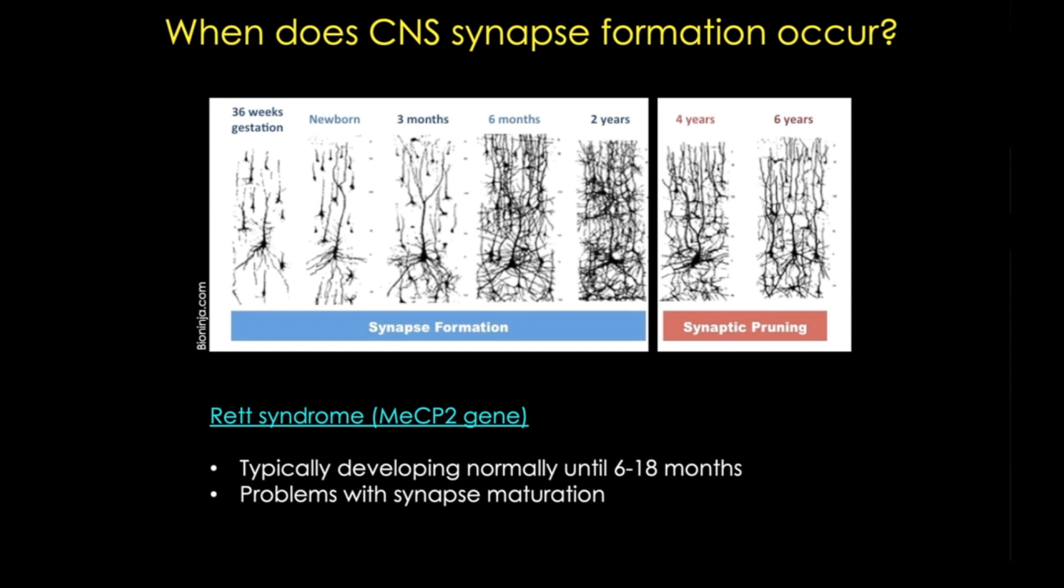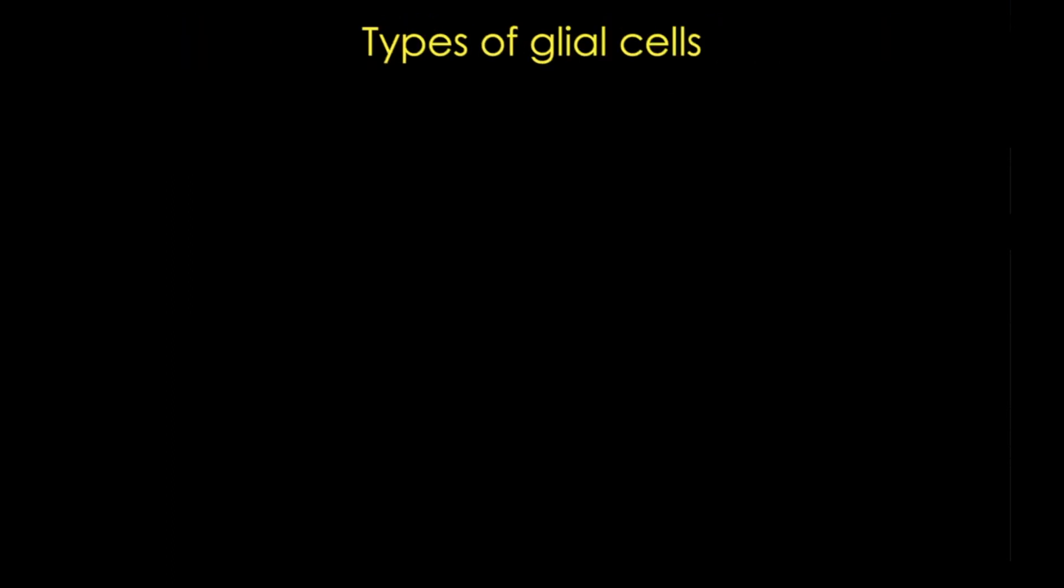All right. Well, let's move on and look at some glial cells. We can divide our glial cell types into both central nervous system and peripheral nervous system types, as well as macro and microglia.